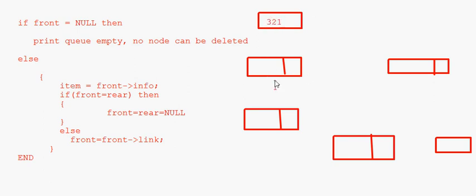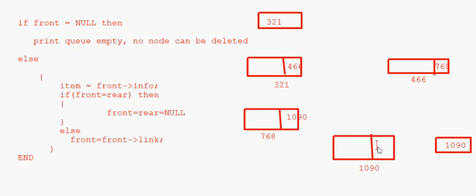Here we have address 321, then 466, then 768, then 1090. The links are: 1090, 466, 768, 1090, and the last node has null. The information part can be any data type — in our examples we have used integers, but it can also be a string, a character, or whatever we want.